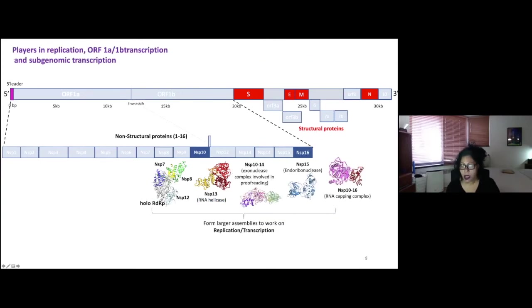And then the other three proteins that are important in replication and transcription that we know have direct nucleic acid processing activities are the exonuclease and the endoribonuclease and then methyltransferases for modifying the RNA. These likely form sub-large complexes to work on replication transcription at some point during these processes, both replication and transcription and subgenomic transcription.